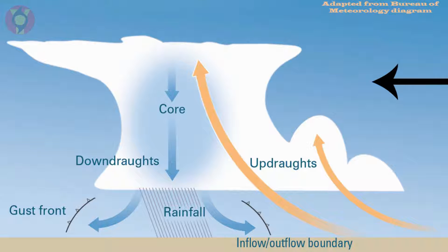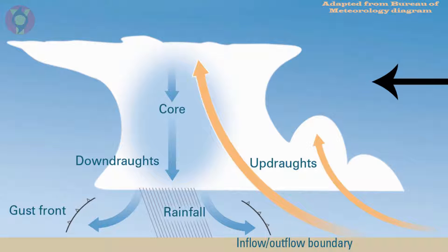In the case where there is wind shear, the thunderstorm gets tilted and the rain falls out at a location displaced from where the warm energy-filled air is entering. This allows warm air to continue to feed into the thunderstorm while the cool rainy air falls out elsewhere. Since the storm can now continue to receive warm air, it can continue to live its life wandering along, vacuuming up new energy-filled air.